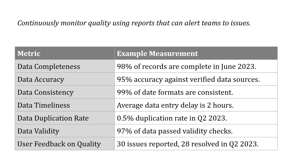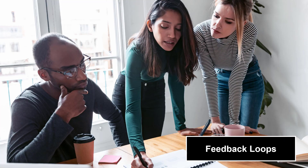We could also use continuous monitoring as another quality management technique — continually monitoring the quality of data using reports that can alert the team to issues. We find some way to measure our quality objectives like completeness, timeliness, duplication, and so on. For example, for completeness, maybe we track that 98% of records are complete in June 2023, or in terms of accuracy, 95% accuracy against verified data sources. It's hard to know what to fix or how to fix it if we're not carefully measuring it. We also want to make sure there are feedback loops so that as we see issues or concerns, we're sharing those — especially with those who are providing the data.